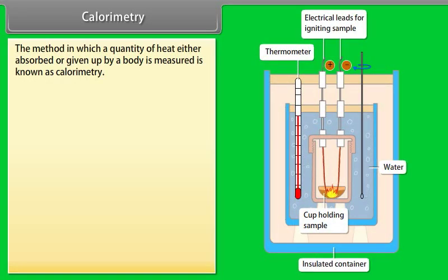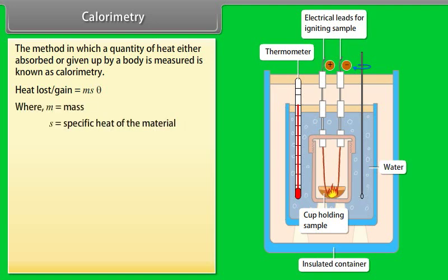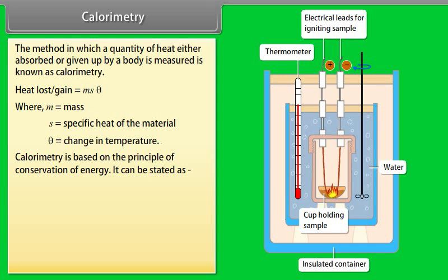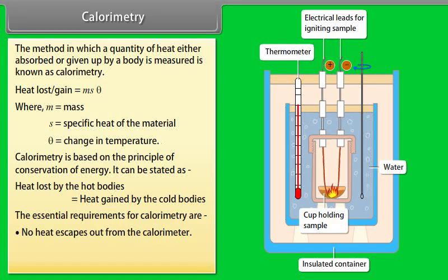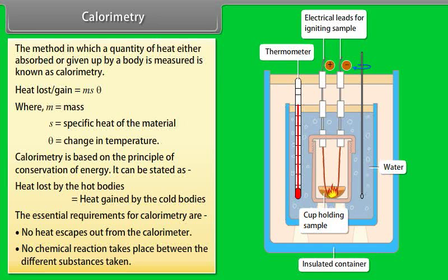Calorimetry: The method in which a quantity of heat either absorbed or given up by a body is measured is known as calorimetry. Heat loss or gain = MSθ, where M is mass, S is specific heat of the material, and theta is change in temperature. Calorimetry is based on the principle of conservation of energy: heat lost by the hot bodies is equal to heat gained by the cold bodies. Essential requirements: no heat escapes from the calorimeter, and no chemical reactions take place between the substances taken.